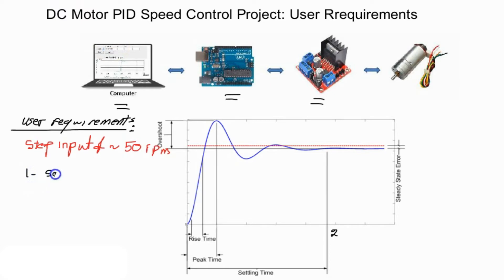1. Settling time - we would like it to be less than 2 seconds. 2. Overshoot - to be less than 7 or 5 percent. 3. Steady state error - to be less than 1 percent.